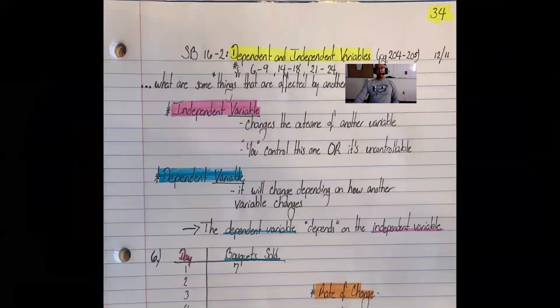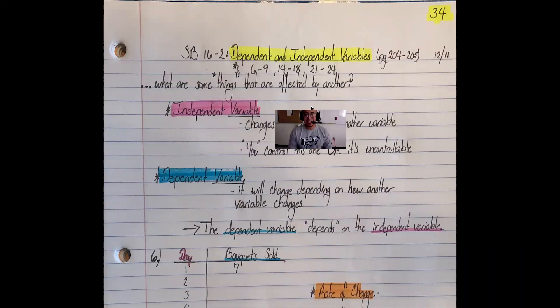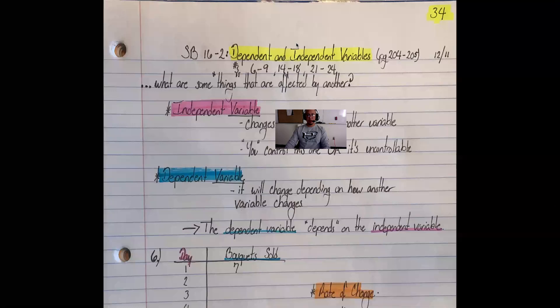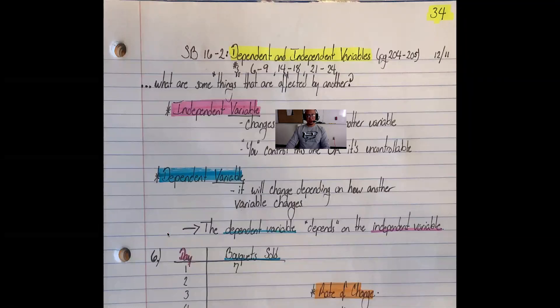Hello, ladies and gentlemen. Welcome once again to our virtual classroom. Today we are going to be going over SB 16-2, which is dependent and independent variables—this is our 34th lesson. I encourage you to pause this video and copy down the notes, especially the top part all the way down to the arrow, so you can follow along in your own notebook. Pause the video and continue once you have done that.